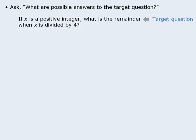Here's another target question. If x is a positive integer, what is the remainder when x is divided by 4? So what are the possible answers to this target question? What are the possible remainders when a number is divided by 4? Well, since a remainder is always less than the divisor, the possible answers here are 0, 1, 2, and 3. So when we examine our statements, our goal will be to determine whether each statement reduces these four possible answers down to just one answer.